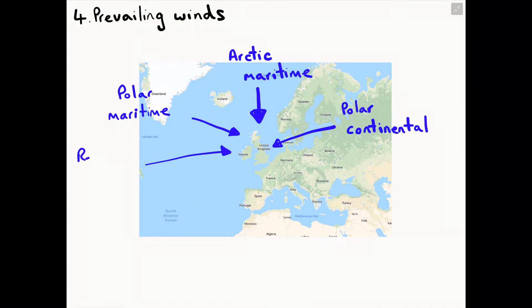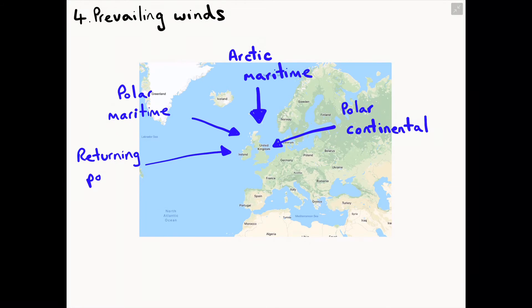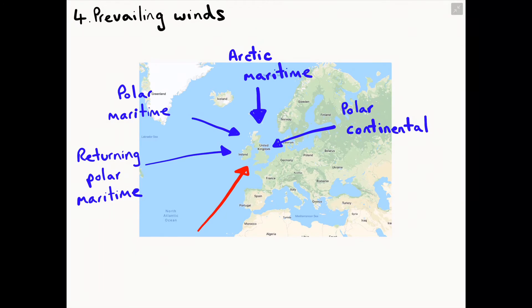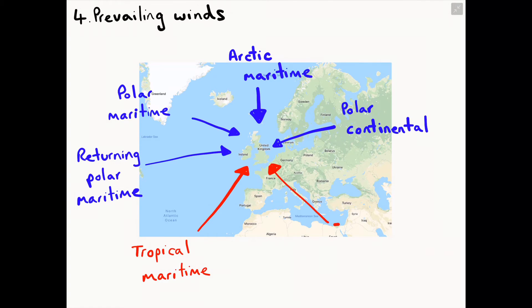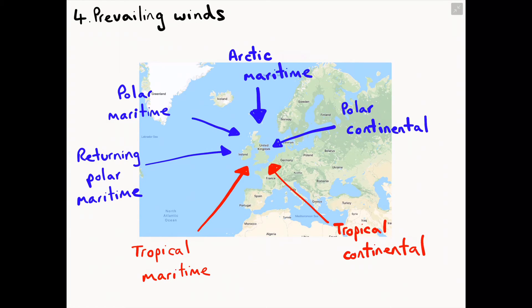The returning polar maritime air mass travels from Greenland and the Arctic via the North Atlantic Ocean. It is usually moist, mild and unstable, bringing cloud and rain showers. The tropical maritime air mass travels from the Atlantic Ocean and is warm and moist, bringing cloud, rain and some mild weather. Finally, the tropical continental air mass, travelling over land from North Africa, is hot and dry, bringing hot weather in summer.